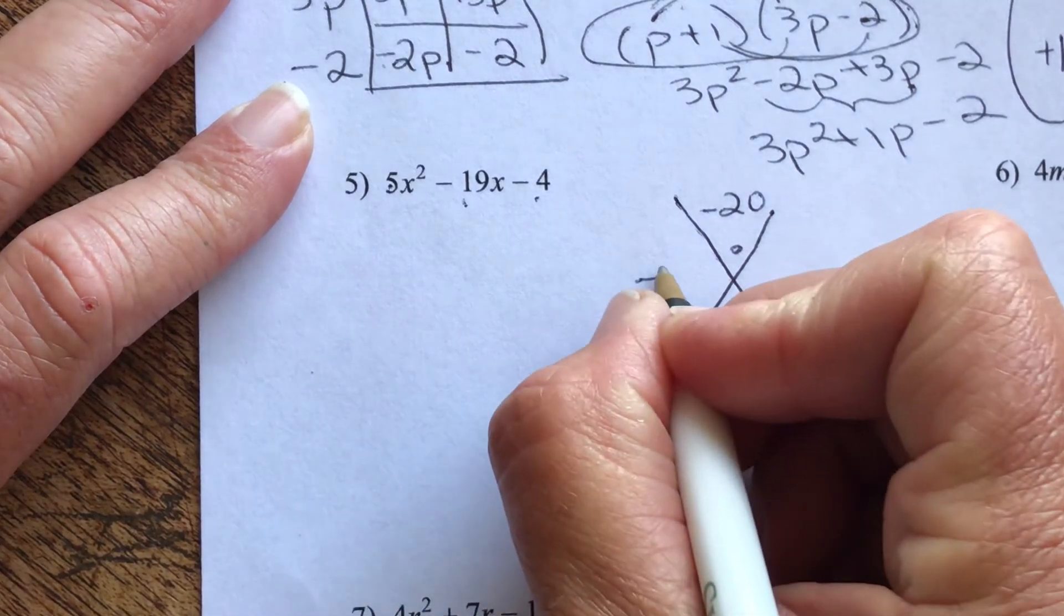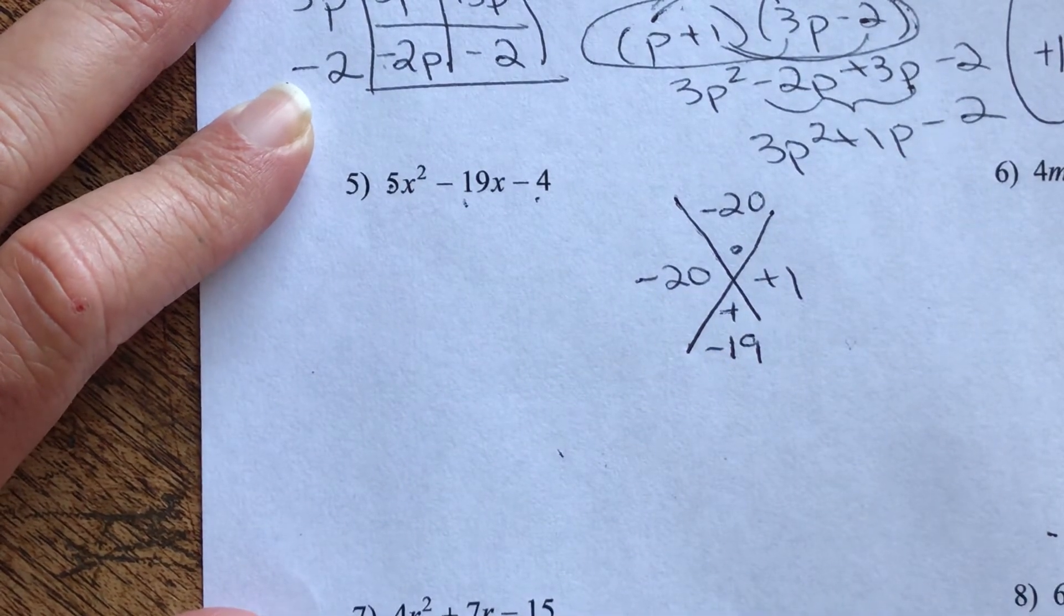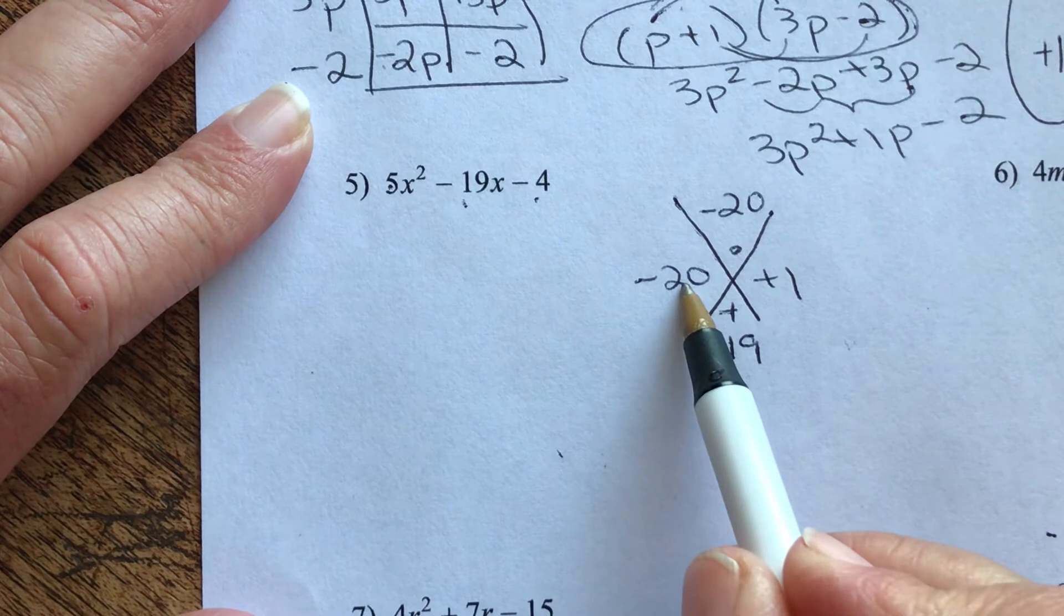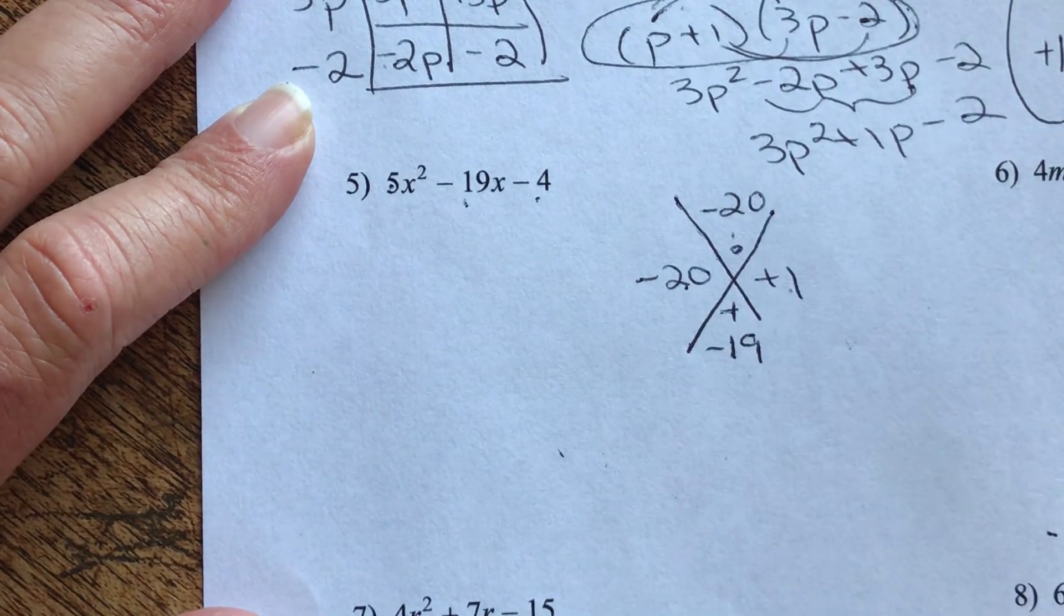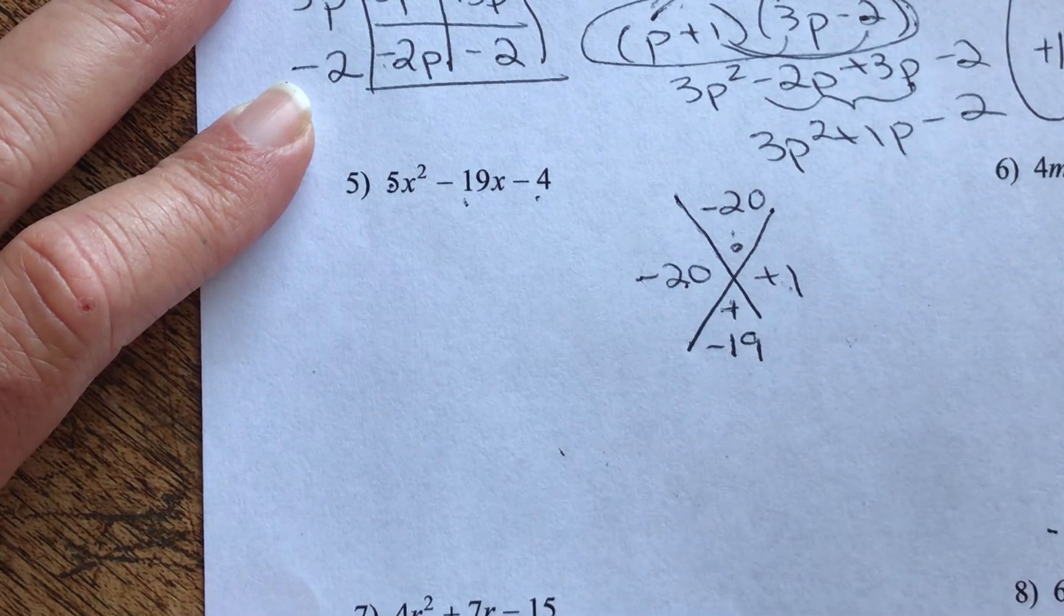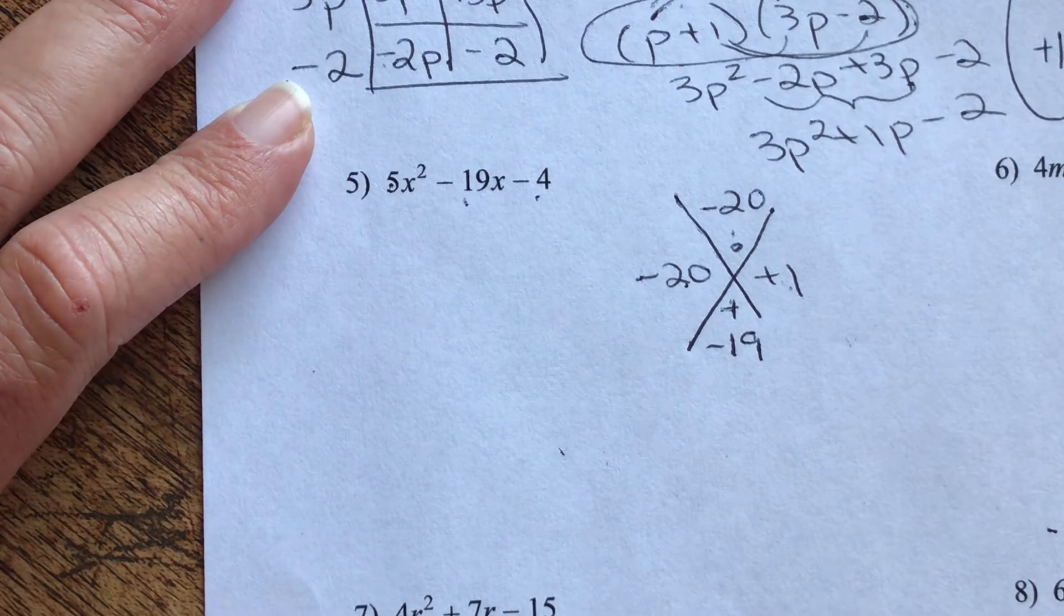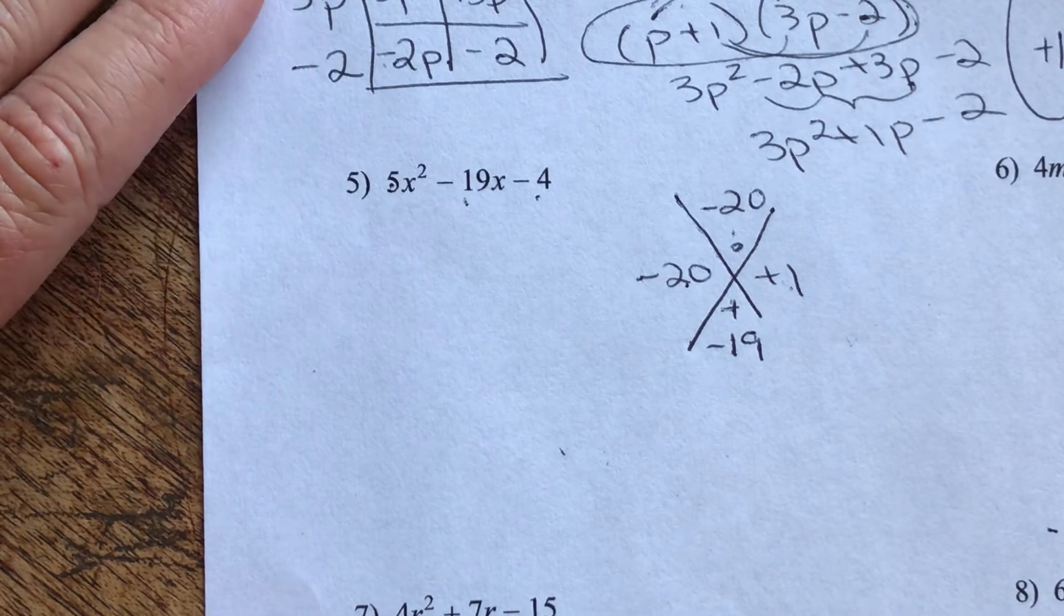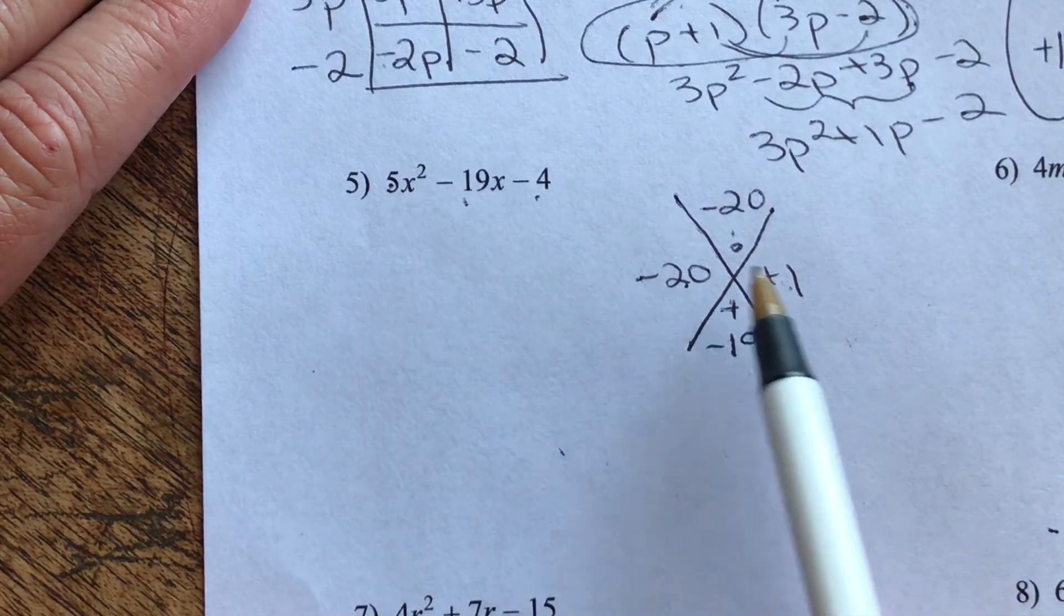What are factors of negative 20 that combine to give us negative 19? Well, it would have to be negative 20 and positive 1. And if you don't believe me, let's check it. Negative 20 times positive 1. Does that give me negative 20? Well, it sure does. Negative 20 added to a positive 1. So it's negative 20. Go forward 1 on the number line. Are we at negative 19? Definitely.